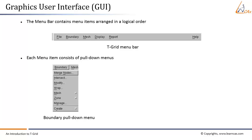One can interact with T-Grid through the console via either the graphical user interface (GUI) or the text user interface (TUI). The menu bar contains menu items arranged in a logical order, each consisting of pull-down menus. To select an item: click the pull-down menu with the left mouse button, move the pointer to the desired item and click, then release the left mouse button.